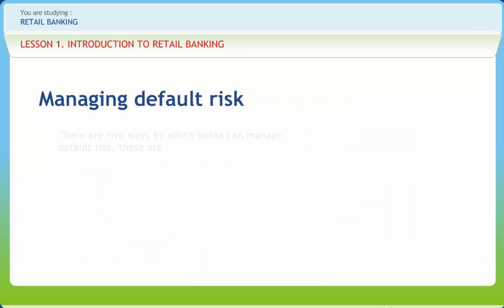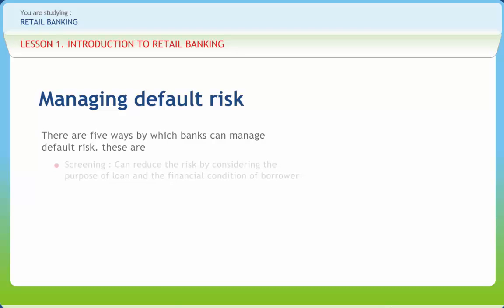There are five ways by which banks can manage default risk. The first is screening: banks can minimize the risk of default for each individual loan by considering the purpose of the loan and the financial condition of the borrower, aiming to select good risks only. Credit scoring is increasingly used in this process of risk analysis and has the advantage of being largely automated.